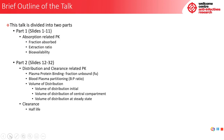A brief outline of the talk is divided into two parts. Part 1 deals with absorption-related PK, where we'll be talking about fraction absorbed, extraction ratio, and bioavailability. Part 2 centers around distribution and clearance-related PK, covering plasma protein binding and fraction unbound (FU), blood plasma partitioning (B to P ratio), volume of distribution — including distribution initial, volume of distribution of the central compartment, and volume of distribution at steady state — as well as clearance and half-life.